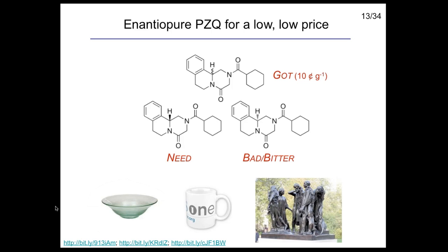That is actually a very difficult problem in chemistry — a lot of organic chemists spend their professional lives trying to solve problems like this. As soon as you start doing research on something, you increase the price of it. You can give someone a pill of this drug for about 10 cents. Academia doesn't normally worry about the price of things, and industry didn't want to solve it because there's no profit margin. So we had a problem which was important to solve but couldn't be solved with traditional research mechanisms.